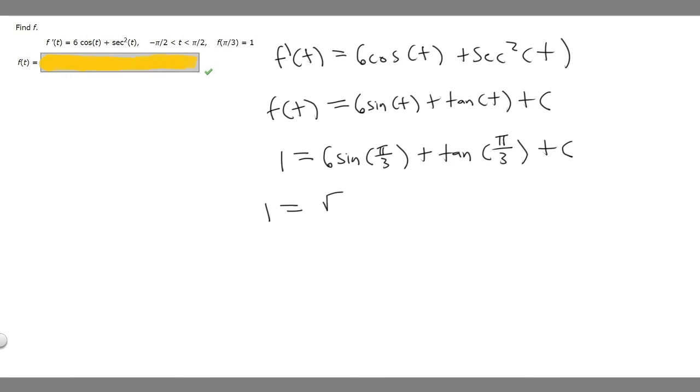And we're multiplying it by 6. So it's going to be 6 times radical 3 over 2, which is just, we can simplify it to 3 radical 3.